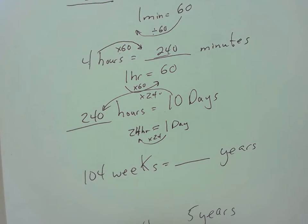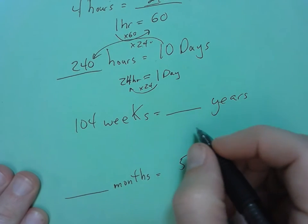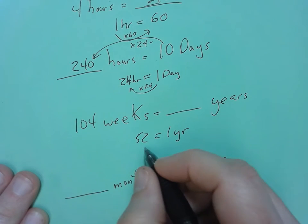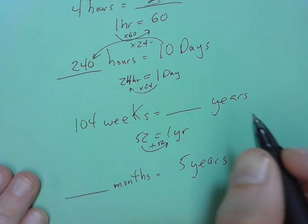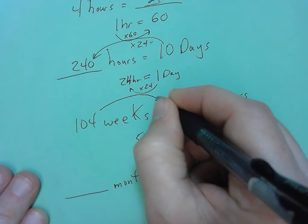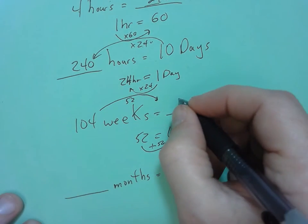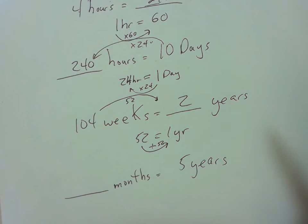Then 104 weeks is how many years? I need to know that one year is 52 weeks. To go from 52 to 1, I'm going to divide by 52. So I divide 104 by 52, and 52 goes into 104 two times because 52 plus 52 is 104. So 104 weeks is equal to two years.